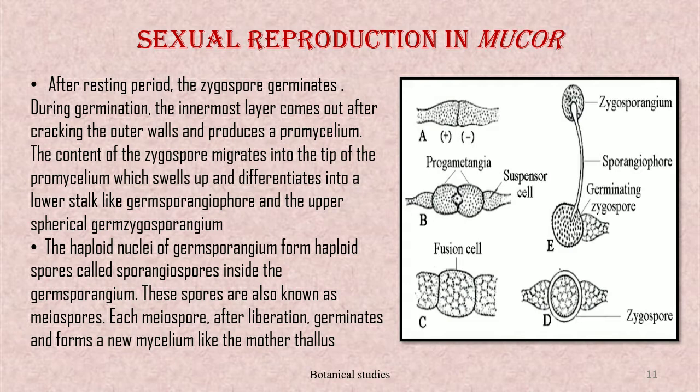The content of the zygospore migrates into the tip of the pro-mycelium, which swells up and differentiates into a lower stalk-like germ sporangiophore and an upper spherical germ sporangium. The haploid nuclei of the germ sporangium form haploid spores called sporangiospores inside the germ sporangium; these spores are also known as meiospores. Each meiospore, after liberation, germinates and forms a new mycelium like a mother thallus.